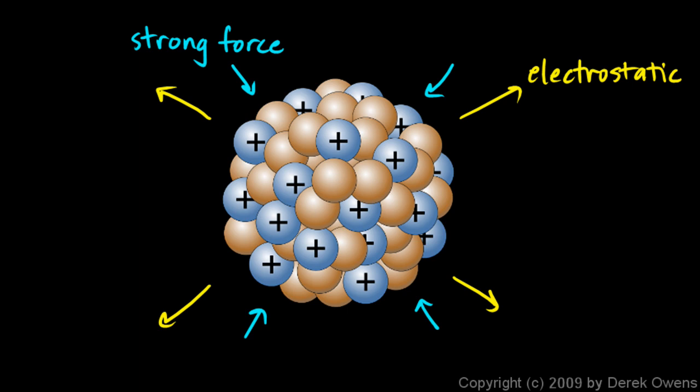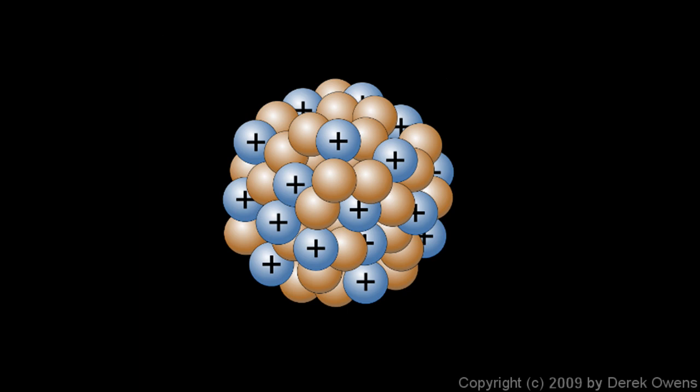But it turns out that large nuclei are unstable, and here's why. A large nucleus has more protons in it, so there's more electrostatic force. In a large nucleus, this outward force gets really strong. The larger the size, the less effective the strong force is, and that's because the strong force has a really short range.